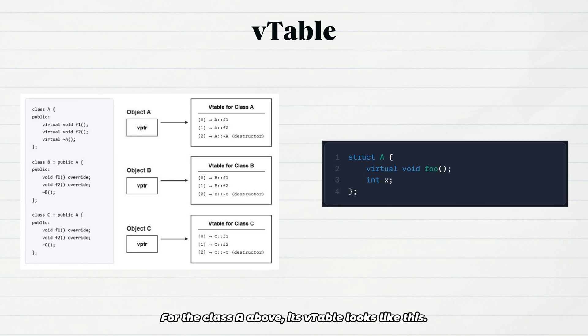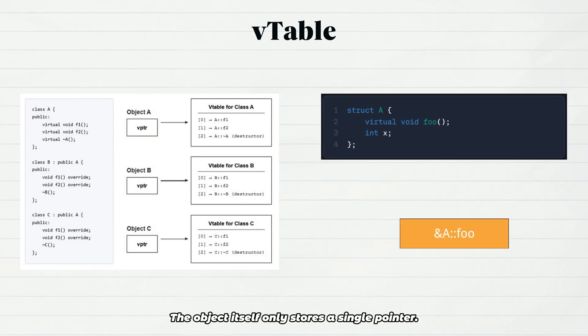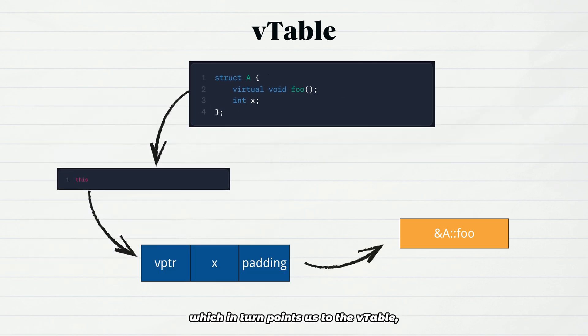For the class A above, its vtable looks like this. The object itself only stores a single pointer. Using this, we find the virtual table pointer, which in turn points us to the vtable, and then we can locate the address of the corresponding virtual function.